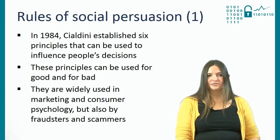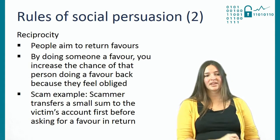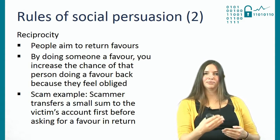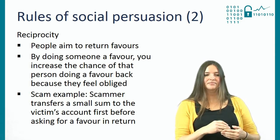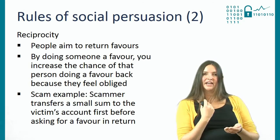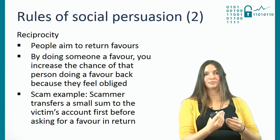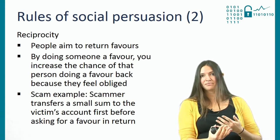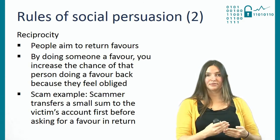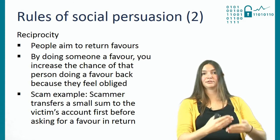The first of the six principles is reciprocity — the idea that people aim to return favours. By doing someone a favour, you increase the likelihood of them doing a favour back. In a scam context, scammers sometimes first transfer a small amount of money into the potential victim's account before asking the victim to return the favour — they first do something, and then based on the reciprocity principle, they expect something back.